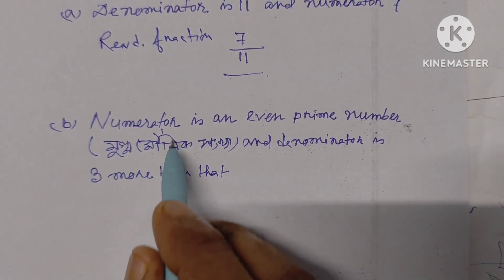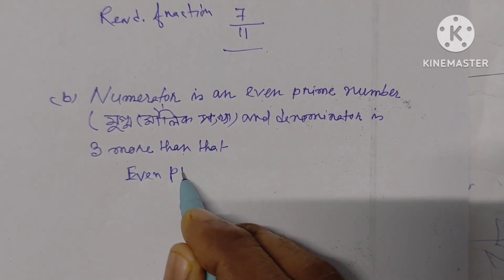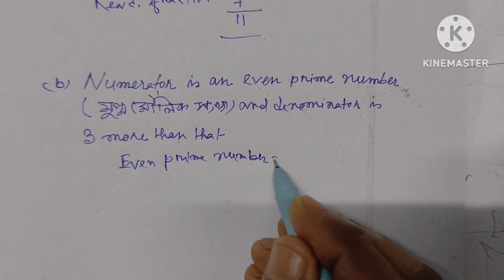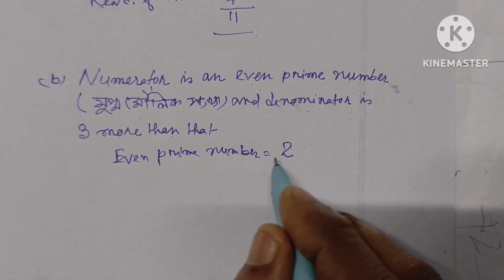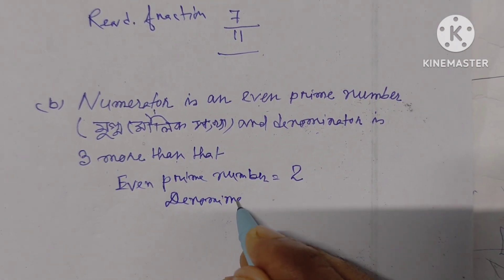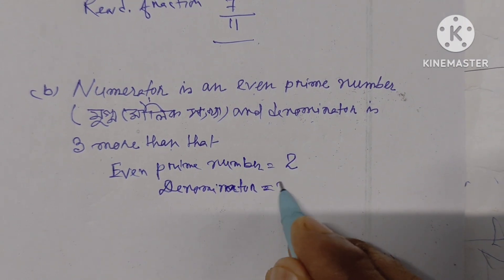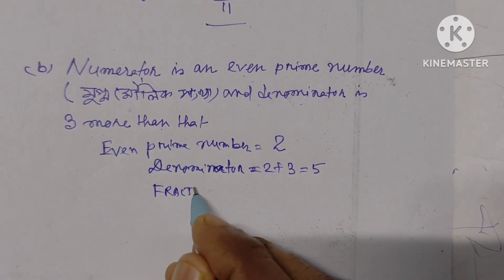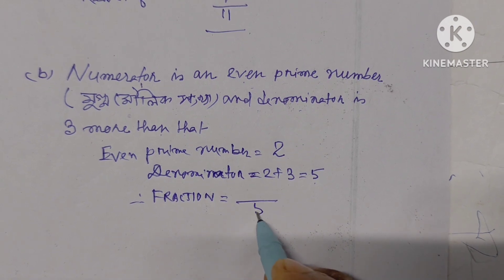Now I am going to write the next one. The numerator is an even prime number. There is only one even prime number, and that is 2. The denominator is 3 more than the numerator, so 2 plus 3 equals 5. Therefore the required fraction is 2 by 5, where 5 is the denominator and 2 is the numerator.